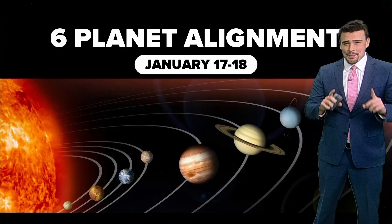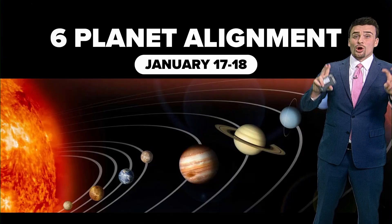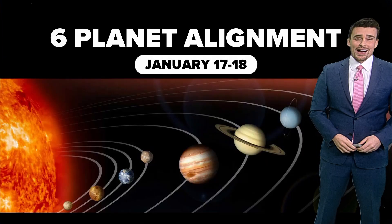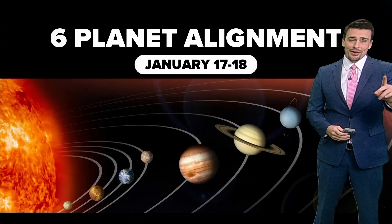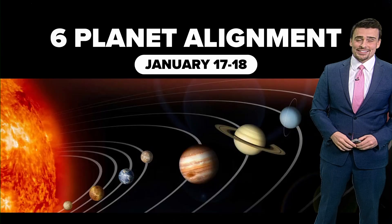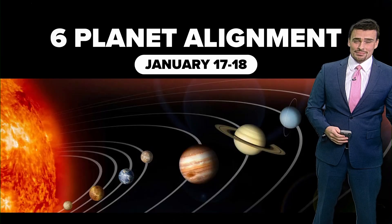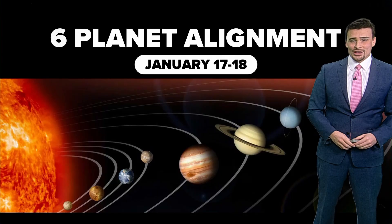A six planet alignment doesn't happen every year, but it's not so rare. It's more rare, but it's not rare overall. A seven planet alignment is definitely a little bit more rare. However, in the month of February 2025, so coming up next, we will have a seven planet alignment. That will take place at the end of the month right after sunset as well.